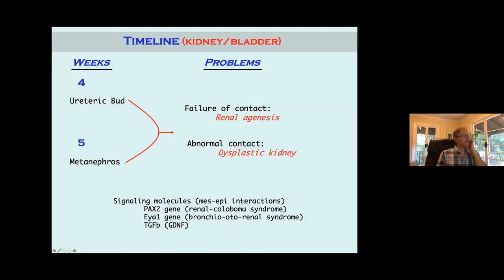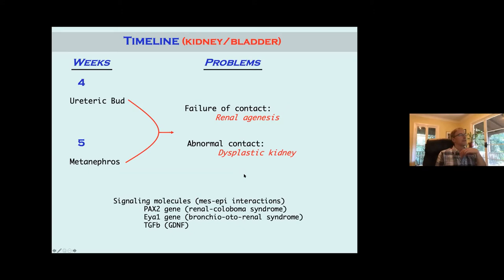PAX2 is a good example because it causes the renal coloboma syndrome, which is autosomal dominant. You have unusual malformation of the optic nerve, renal anomalies, and reflux. The gene that affects mesenchymal-epithelial interactions is not working correctly when you get these abnormalities.